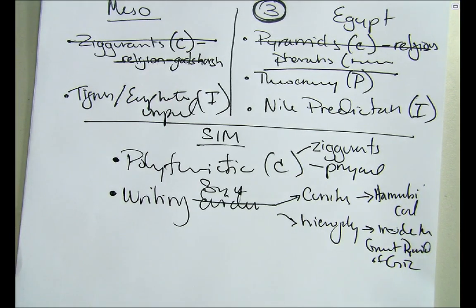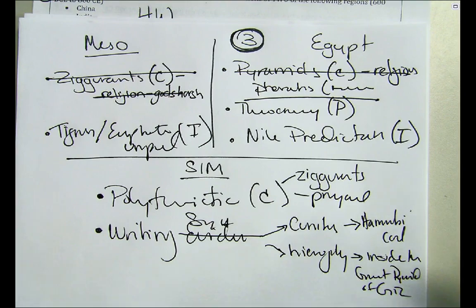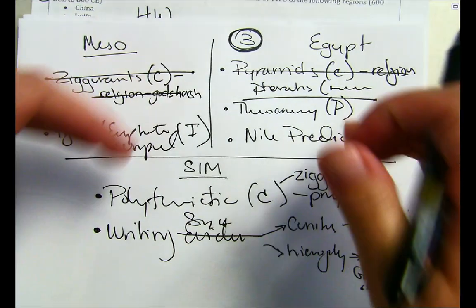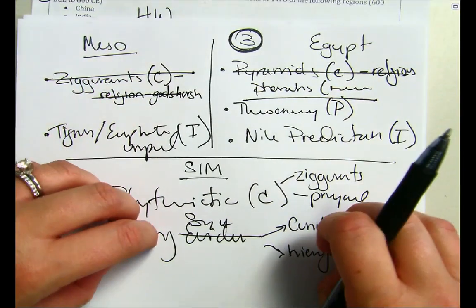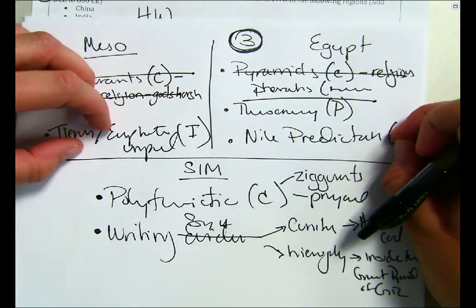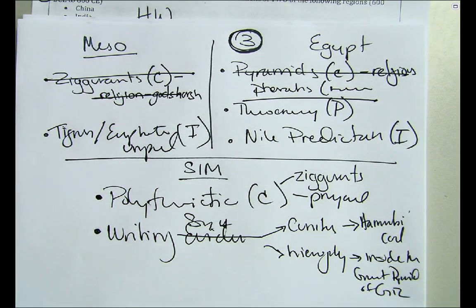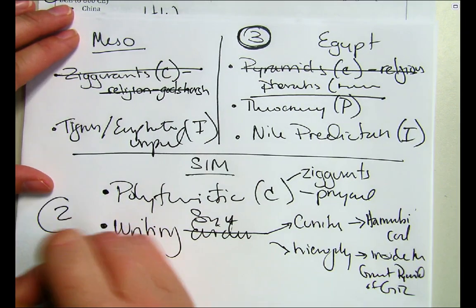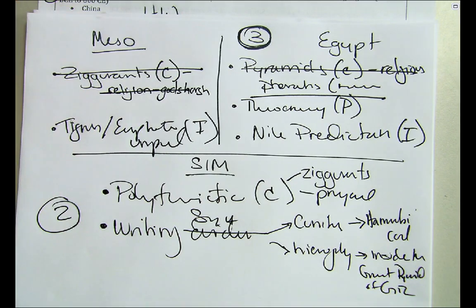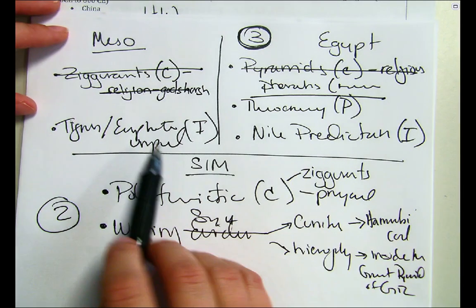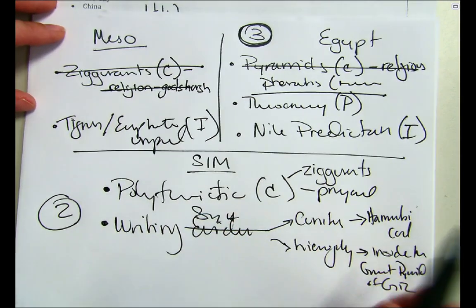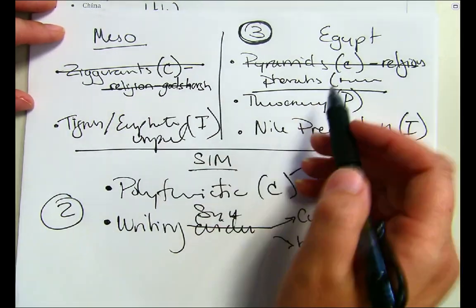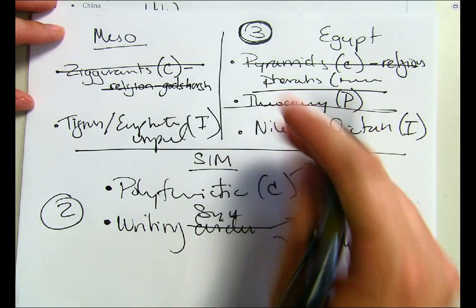Looking back at our compare and contrast plan: we need at least two similarities or two differences. Which ones are going to be easier to argue? We'll do two similarities—writing systems and polytheism—and compare the rivers as our one difference.